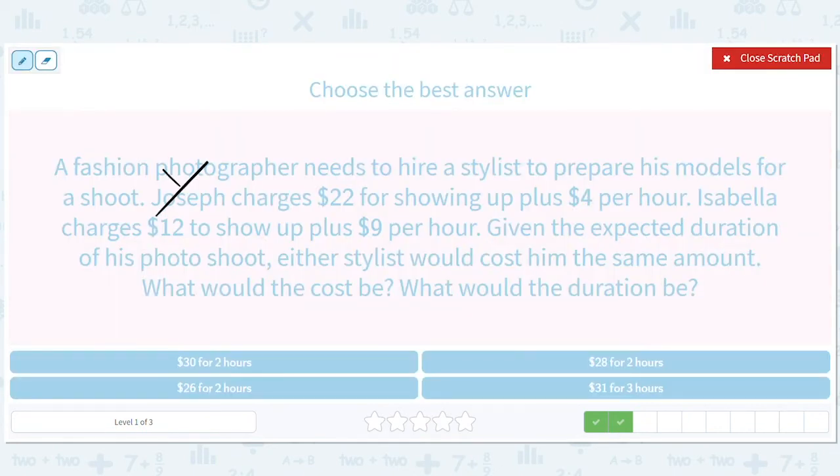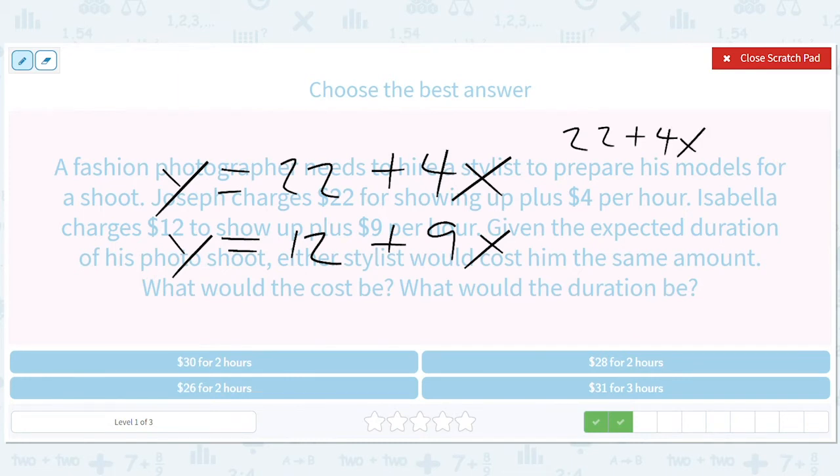Y equals 22 for showing up plus 4 per hour. That's the thing that gets the X. Isabel charges $12 to show up plus 9 per hour. That gets the X. Set these equal. You'll get 22 plus 4X equals 12 plus 9X. That's going to give us 10 equals 5X. I'm going to do two steps at once. 10 equals 5X. Subtract the 12. Subtract the 4X. So X equals 2. Plug in the 2 here. You get 8 plus 22 is 30. So 2 and 30.